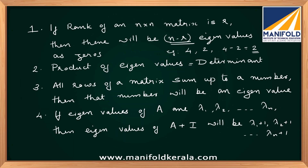The second point is: the product of eigenvalues will always be equal to the determinant of the matrix. The third point is: if all rows of a matrix sum up to a single number, then that number will be an eigenvalue.